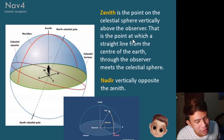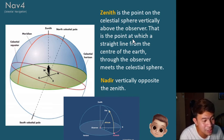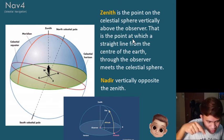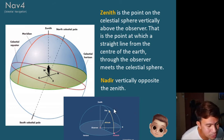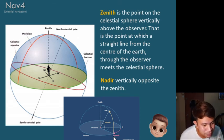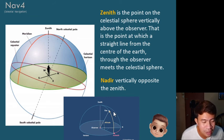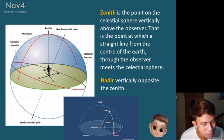The zenith is the point on the celestial sphere vertically above the observer — the point at which a straight line from the center of the Earth through the observer meets the celestial sphere. The point directly above you is the zenith, and opposite to it at the very bottom is the nadir. The azimuth is the angular direction of the star you are observing, measured from north — similar to a bearing. The altitude is the angle from the horizon upward to the observed body.